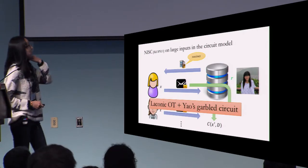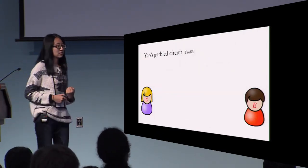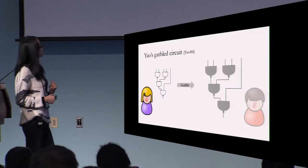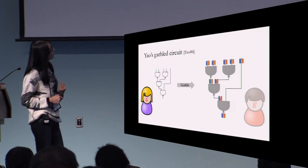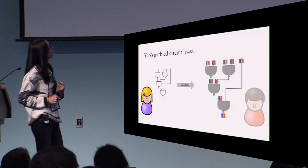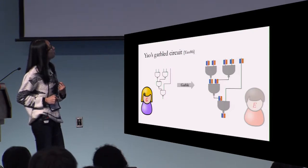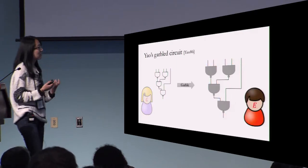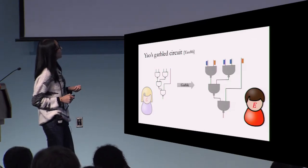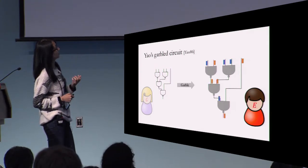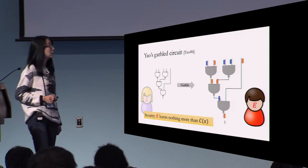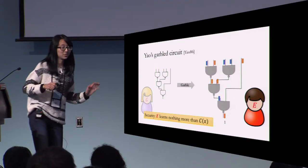I want to briefly describe Yao's Garbled Circuit, where you have a garbler, an evaluator, and a circuit C. The garbler will garble this circuit into a garbled circuit, and along with every wire there are two random bit strings called labels — one label corresponding to the wire being zero, and one label corresponding to the wire being one. These labels are hidden to the evaluator. But if the evaluator wants to evaluate this garbled circuit, he will need one label per input wire, and then he can evaluate the garbled gates one by one and figure out the output. The security guarantee is that the evaluator learns nothing more than the output.